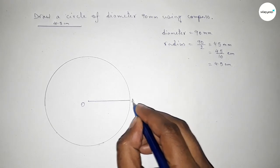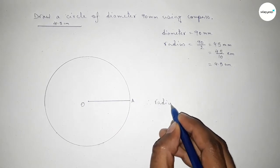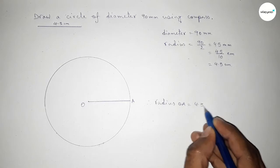So taking here point A. Therefore, radius OA, so radius OA equals 4.5 centimeter.